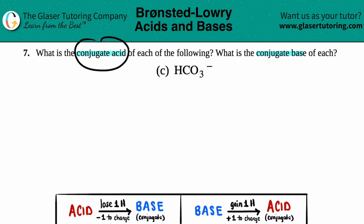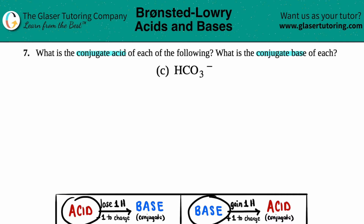If you can find a conjugate acid and a conjugate base of one individual ion, that means HCO3- can act as both an acid and a base — it's got both properties. It can act as an acid because there's an H in the front; anytime you see an H in the front of a molecule, it's going to be an acid. It can also act as a base because it has a negative charge — generally, if you see negative charges, it will act as a base.